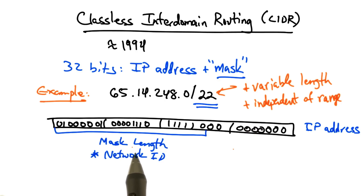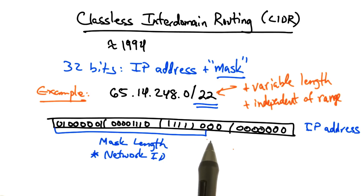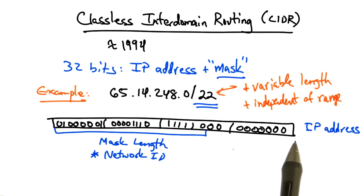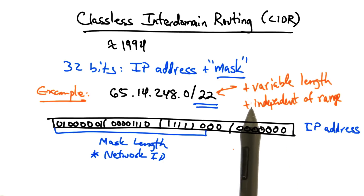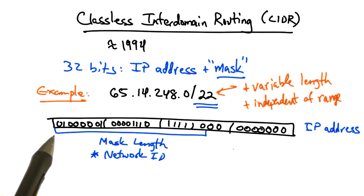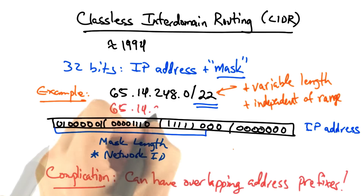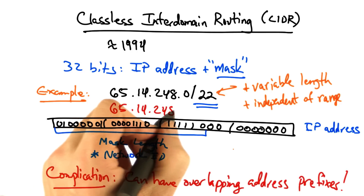This allows those allocating IP address ranges to both allocate a range that's more fitting to the size of the network, and also not have to be constrained about how big the network ID should be, depending on where in the IP address space the prefix is being allocated from.